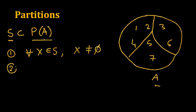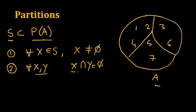The second condition is that for all X and Y — any two subsets in the partition — their intersection should be the null set, that is X and Y are disjoint. This should be true for all pairs of sets included in the partition, so they should be pairwise disjoint.